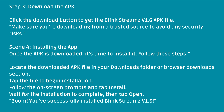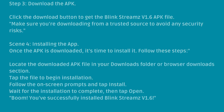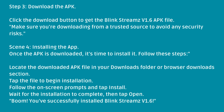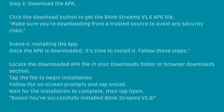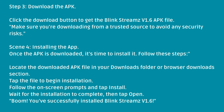Once the APK is downloaded, it's time to install it. Locate the downloaded APK file in your Downloads folder or Browser Downloads section. Tap the file to begin installation, follow the on-screen prompts, and tap Install. Wait for the installation to complete, then tap Open. You've successfully installed BlinkStreams V1.6.